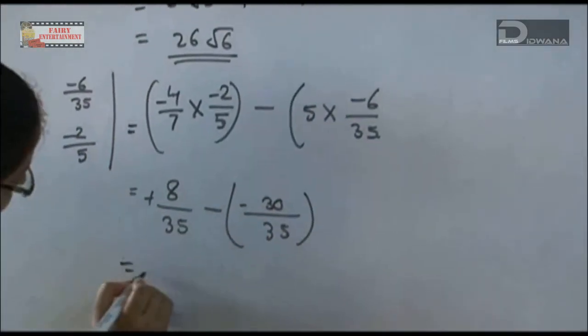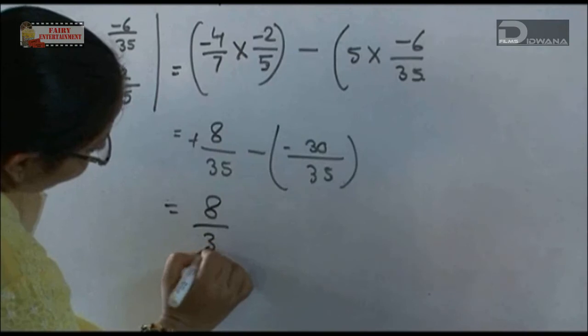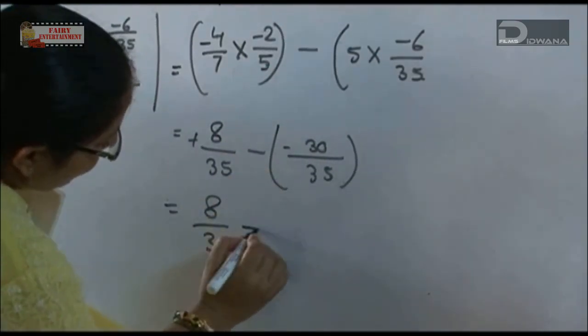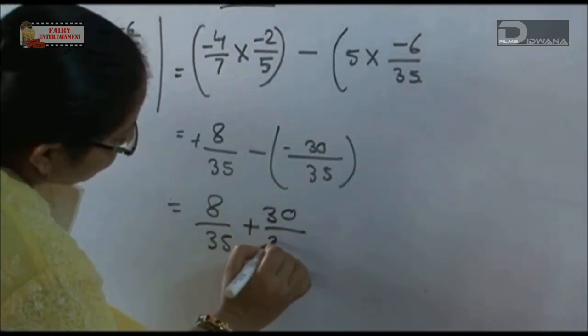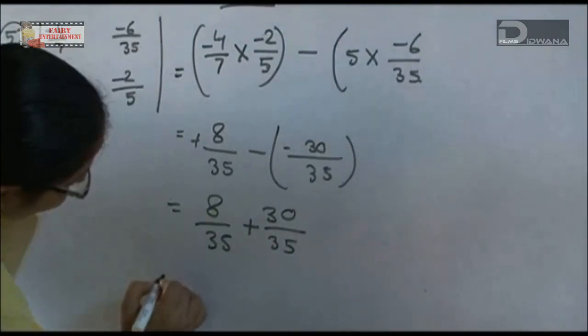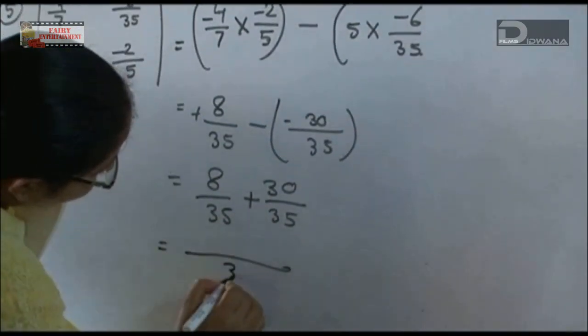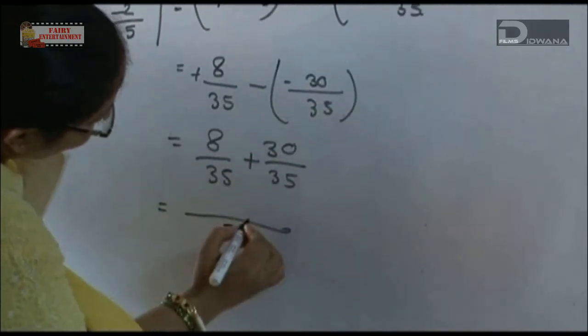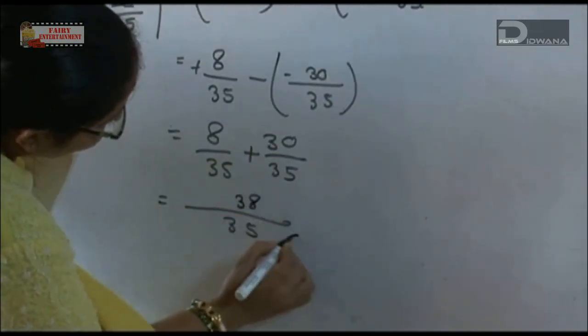This will be 8/35, minus minus will be plus 30/35. The answer will be, denominator 35, 30 plus 8 equals 38. This is the answer.